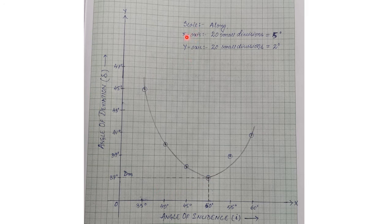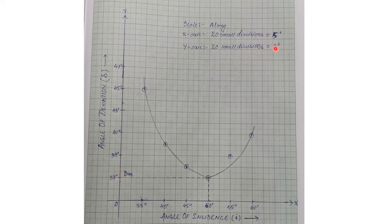Write down the scale on your graph. Along the x-axis: 20 small divisions equals 5 degrees. Along the y-axis: 20 small divisions equals 2 degrees. After drawing the curve, mark the minimum angle of deviation, which is 37 degrees.